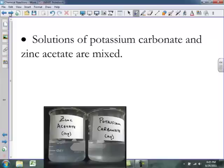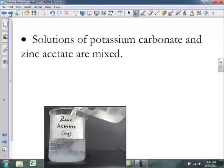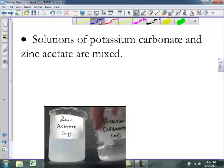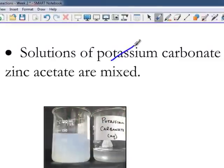Our second reaction will be solutions of potassium carbonate and zinc acetate are mixed together. And so, again, what we want to find is our spectator ions. Potassium is an alkali metal ion, so that will be a spectator, as well as acetate will be a spectator as well.